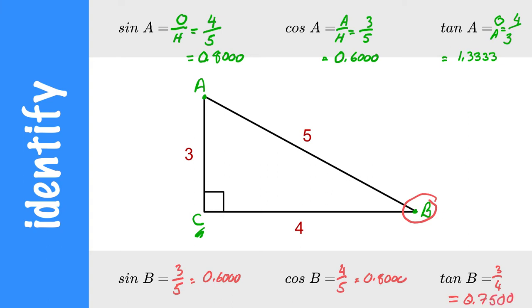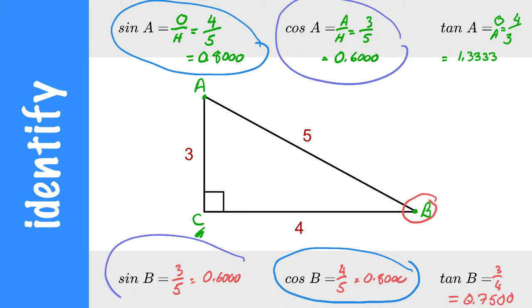You may notice at this point that cosine of B and sine of A are the same values. And cosine of A and sine of B are the same values.